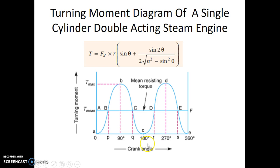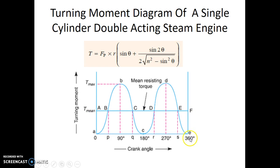If we consider the total work done in one cycle, it is represented by the total area below this curve. If we consider that the same amount of work was also being done using a constant torque, that torque is represented by the mean torque. This means that if we take the constant torque applied for one complete rotation, the total work done will be the rectangular area below this mean torque line, and this area has to be equal to the total area below the turning moment curve.